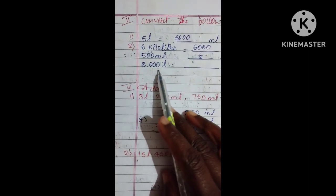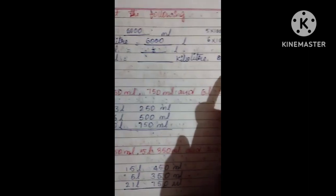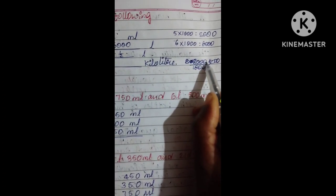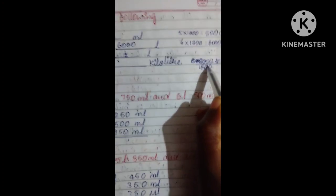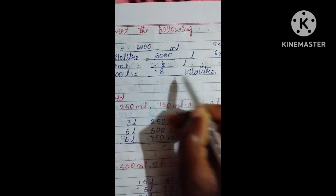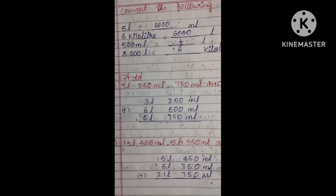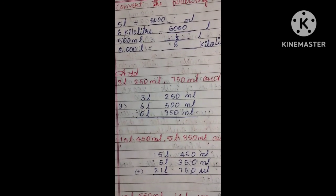Cancel three zeros from 8000, leaving 8 kiloliters. Next we can move to addition in the next video. Thank you for watching.